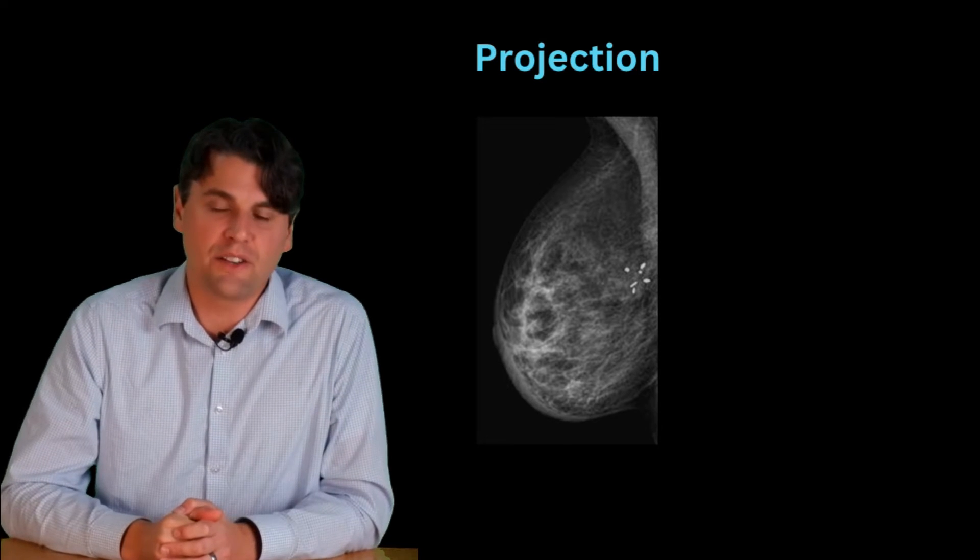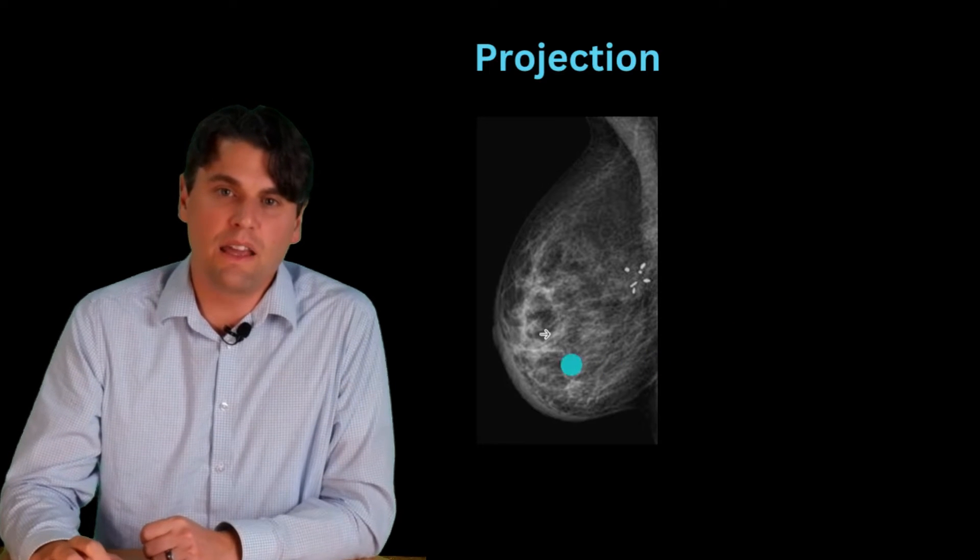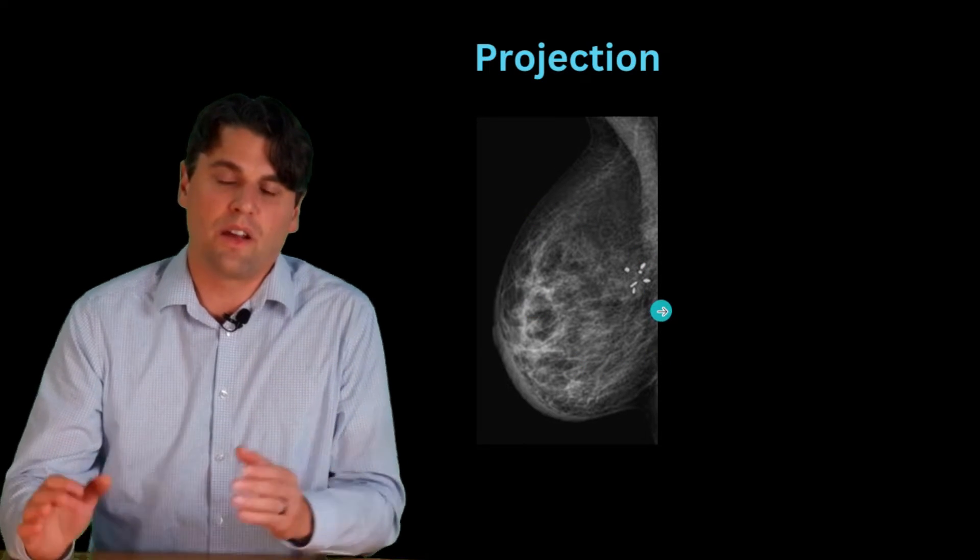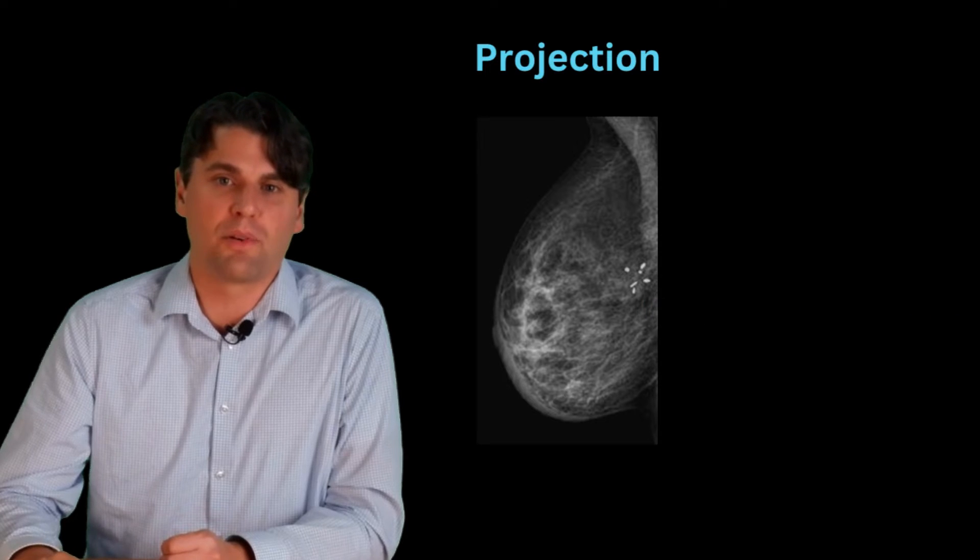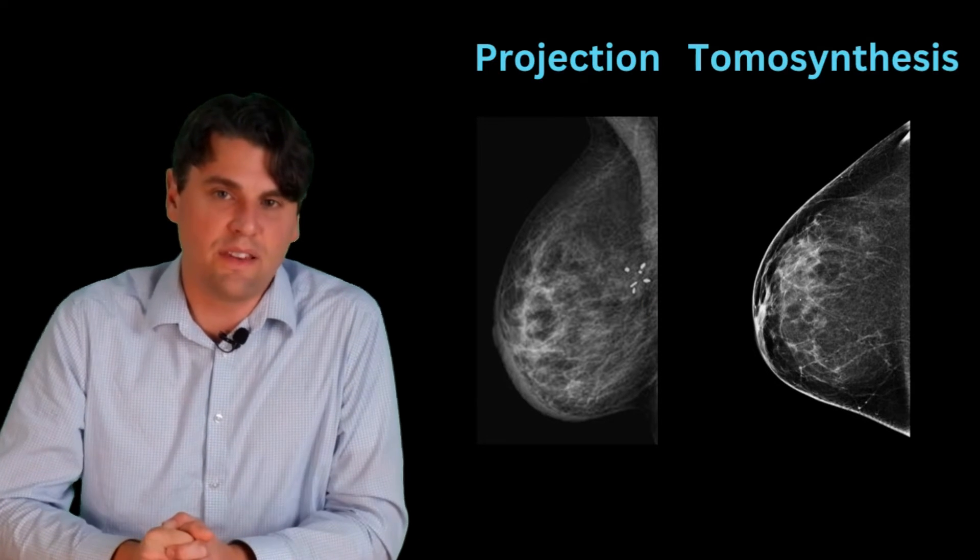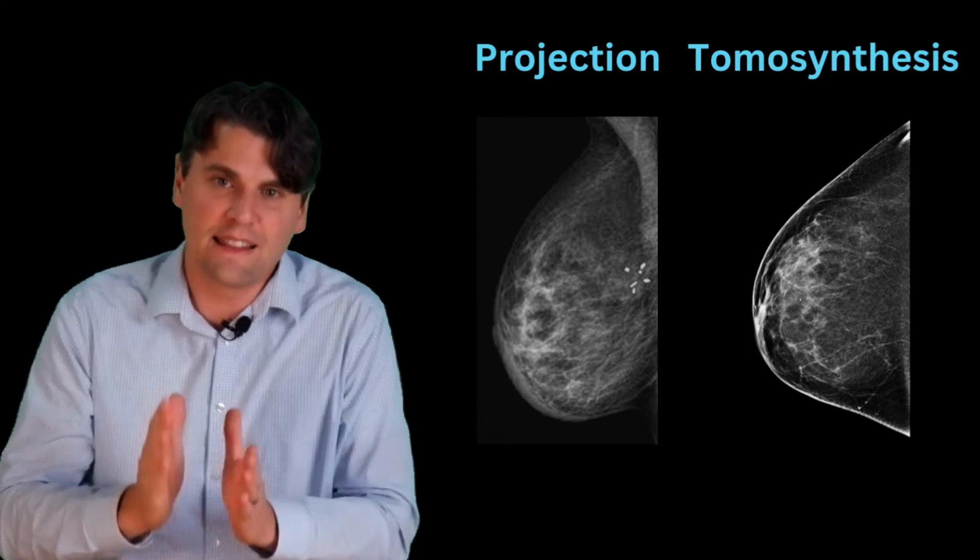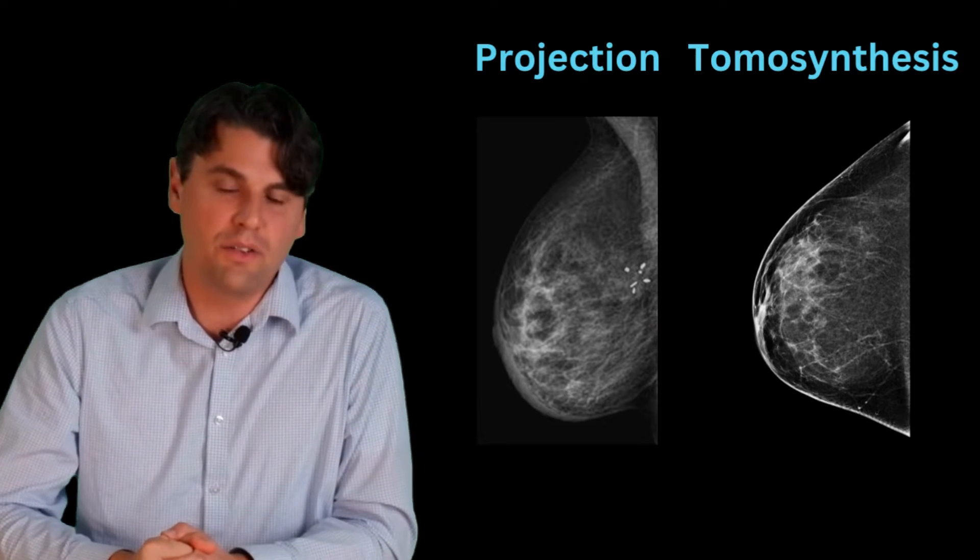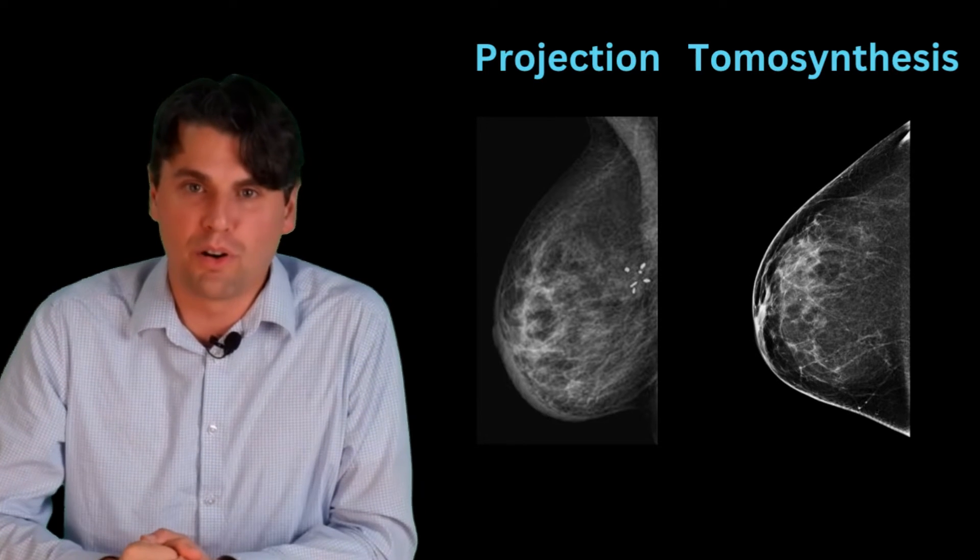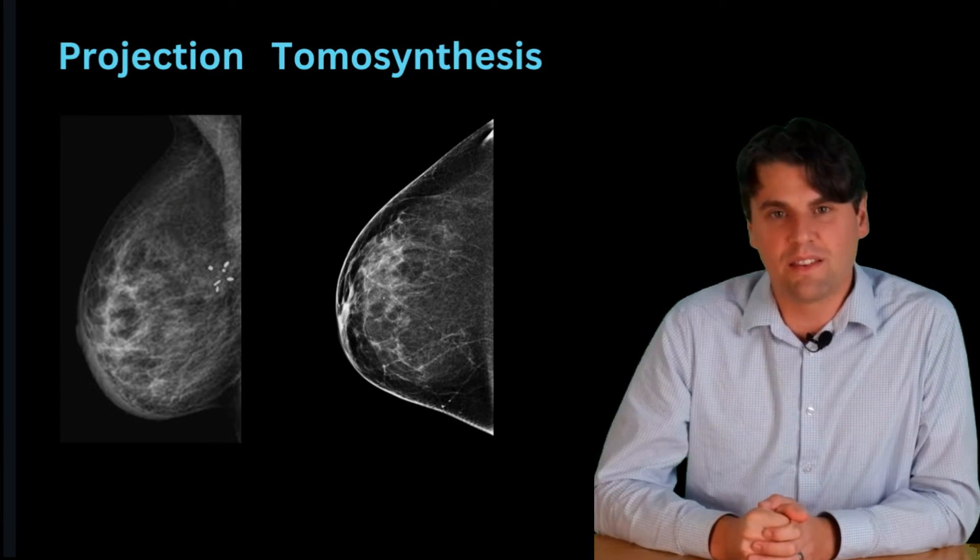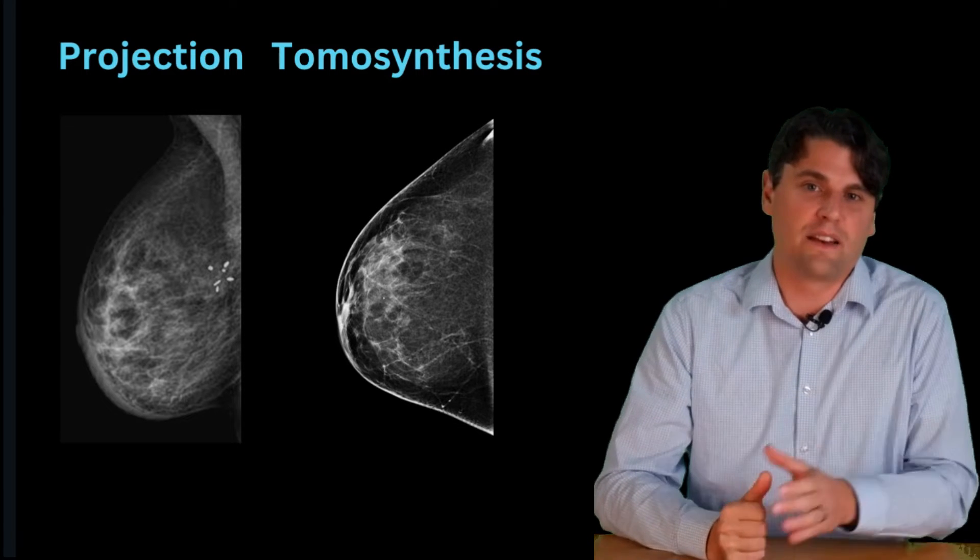So the projection-based method, which is your standard mammogram, you can see that right here, and you can see that there's a significant amount of tissue which is overlapping in your standard projection image. And in the tomosynthesis image, now you can see that you're actually looking at less of the actual tissue volume because the stuff outside of that plane has actually been blurred out. This is why tomosynthesis can allow for improved visualization in comparison with a standard projection.